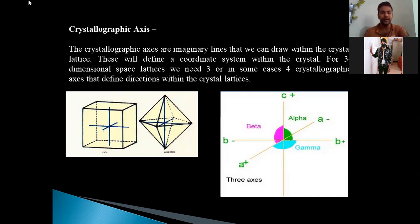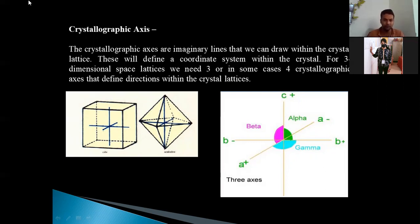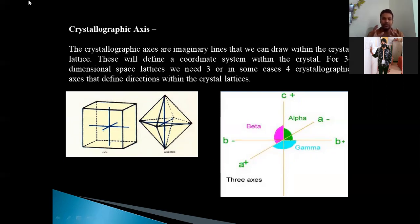It is very important that the axial angles and the axial system define the three-dimensional crystallographic space lattice. As we know, crystals are nothing but the space lattice and the repetitive units of the unit cell. These space lattices are arranged in an orderly manner, and if you want to explain them or create a write-up about them, you must have an imaginary arrangement so that you can fix their orientation.